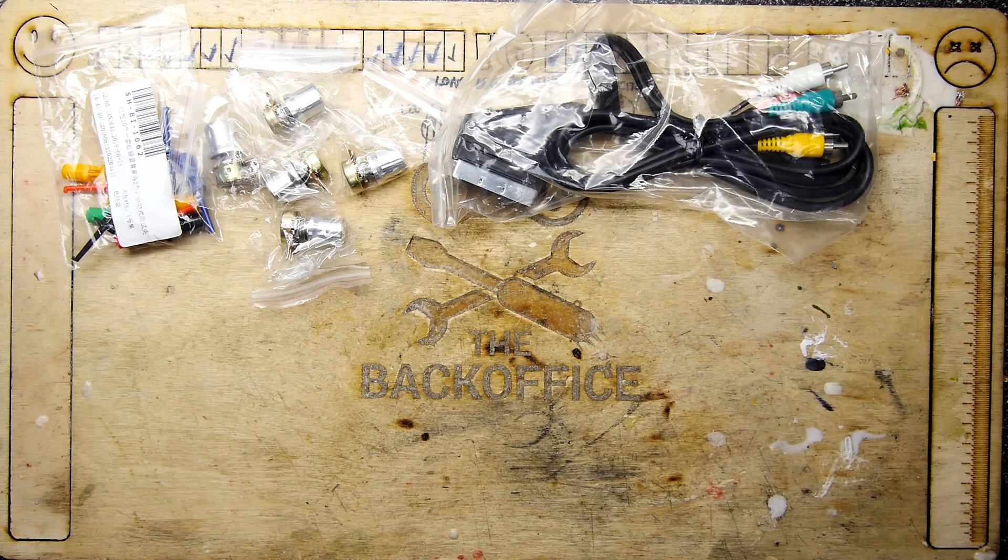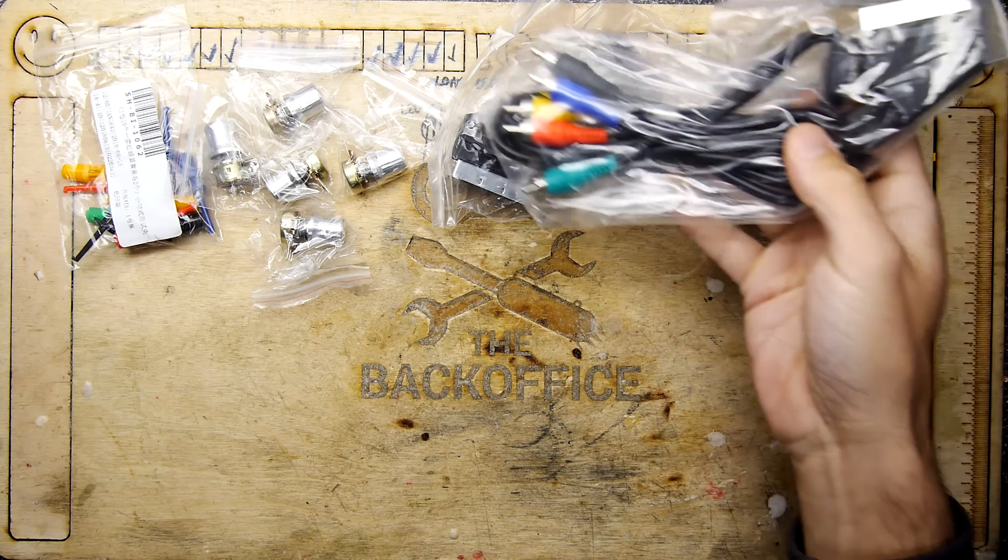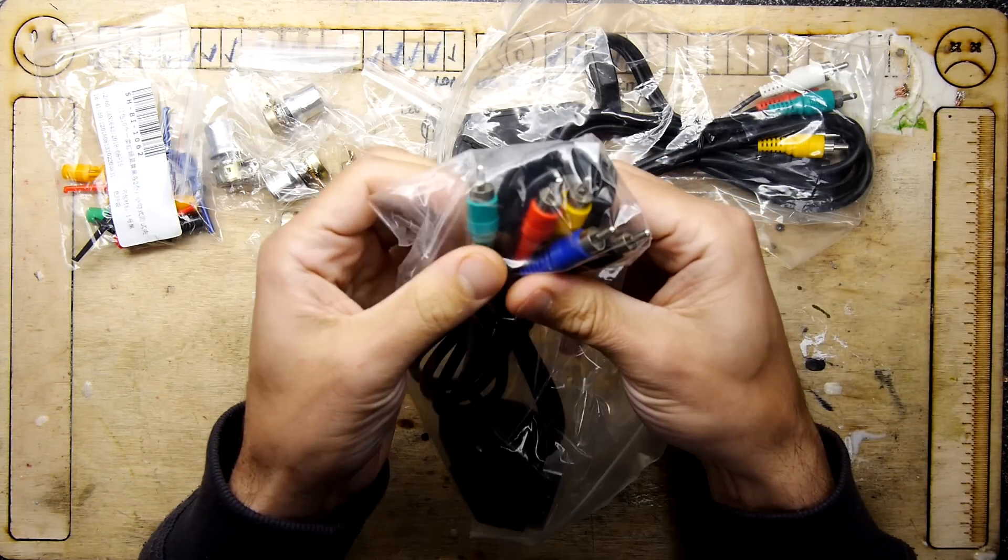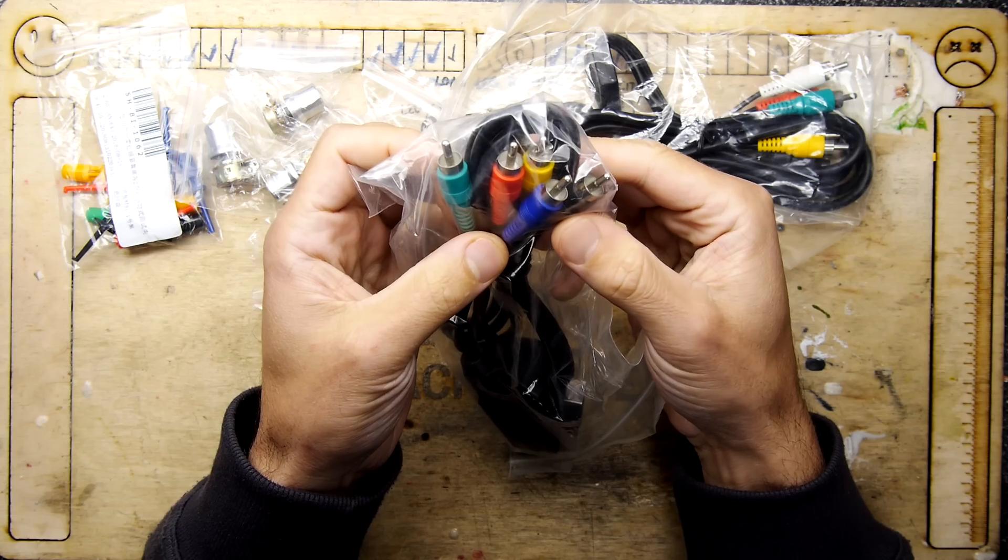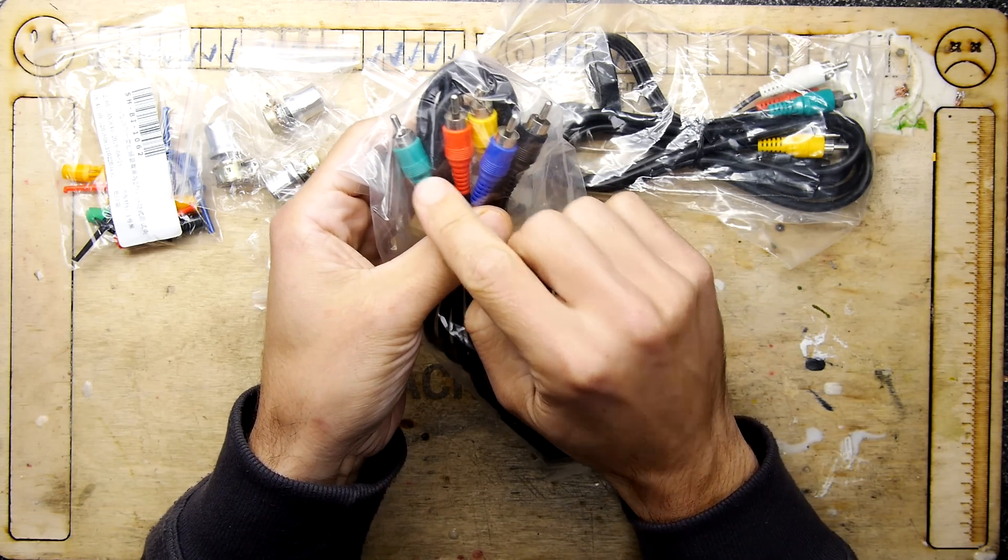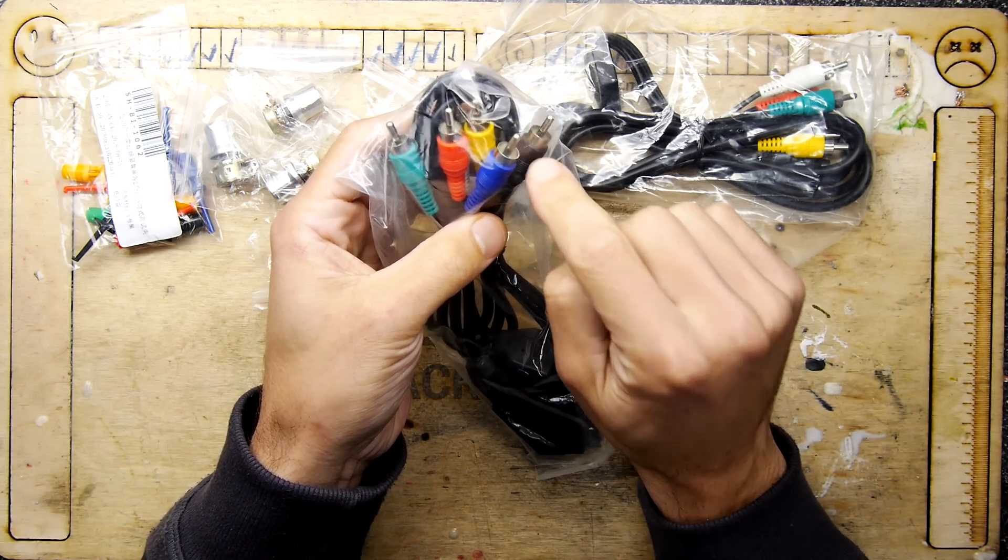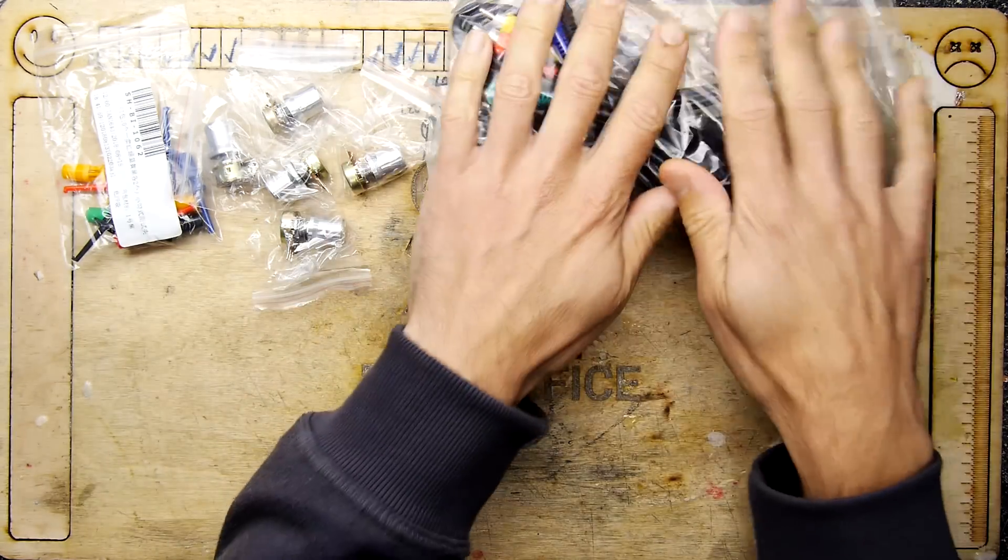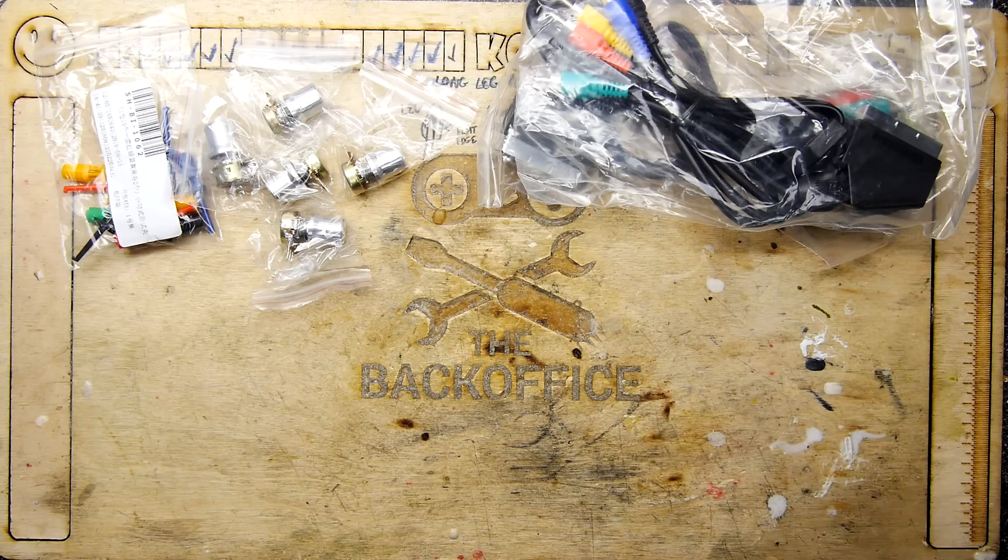Some multi-colored component cables. These are red, green, blue, ground, and sync. Red, green, blue, ground, and sync. So that's RGB component cables.